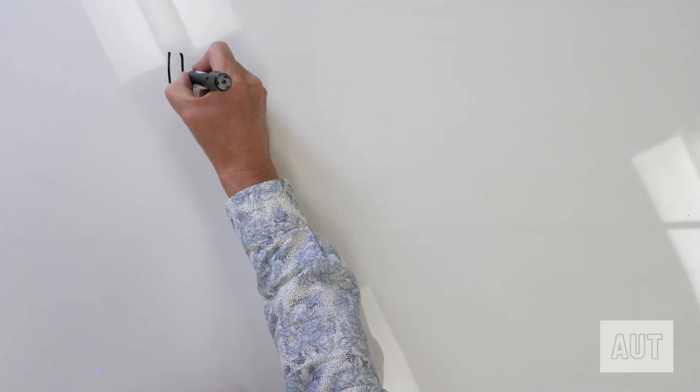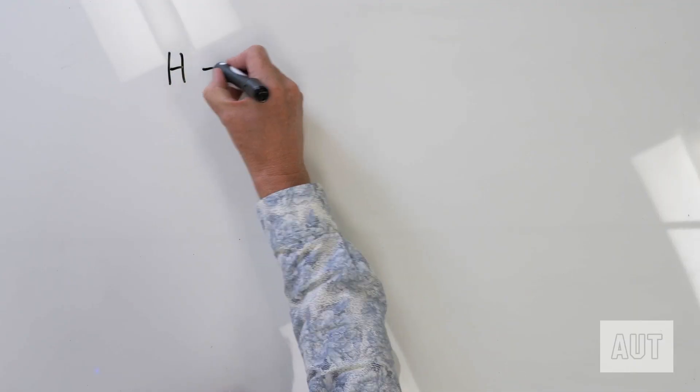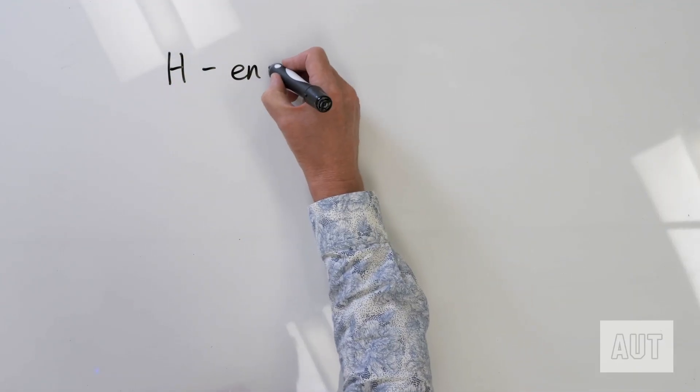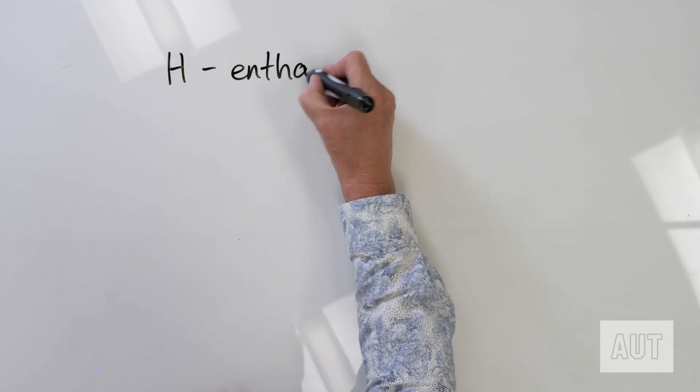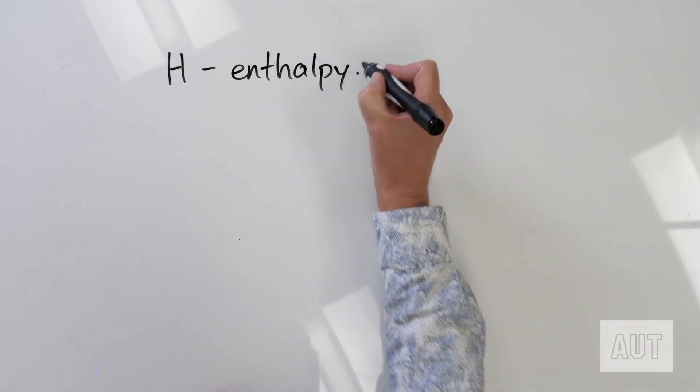The symbol for enthalpy is H. It is a very common measurement in thermodynamics. So let's have a look at the use of this idea of enthalpy in one or two thermodynamic calculations.